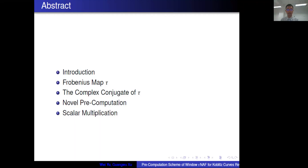The outline of my presentation is as follows. First, a brief introduction of this work. Secondly, we introduce Frobenius map tau. Thirdly, we introduce the complex conjugate of tau and present an efficient formula of the complex conjugate. Fourthly, we propose a new pre-computation scheme. Later, we discuss scalar multiplication using the new proposed pre-computation scheme on Koblitz curves. Finally, we conclude this work.